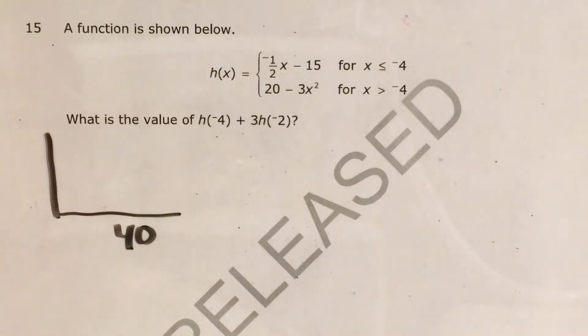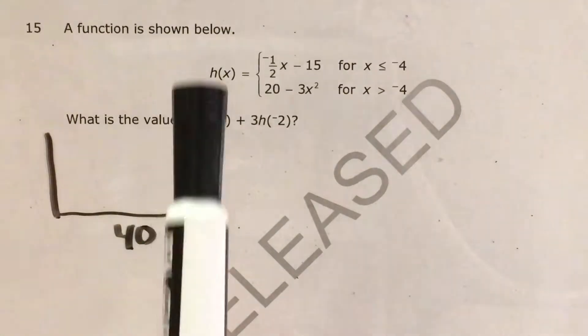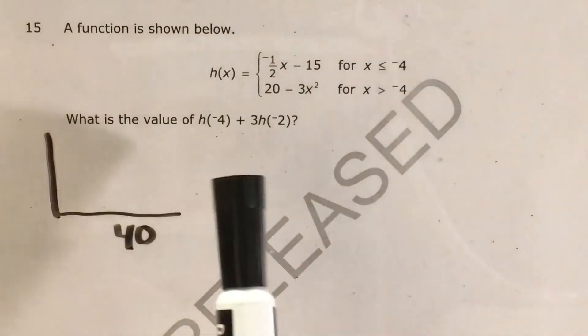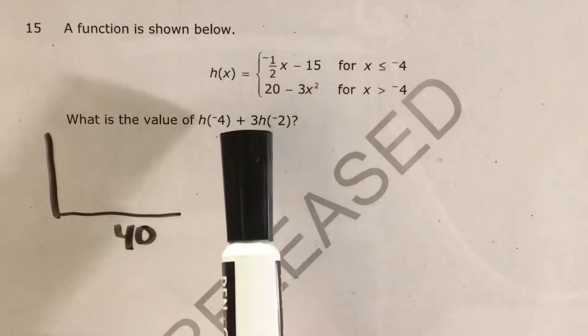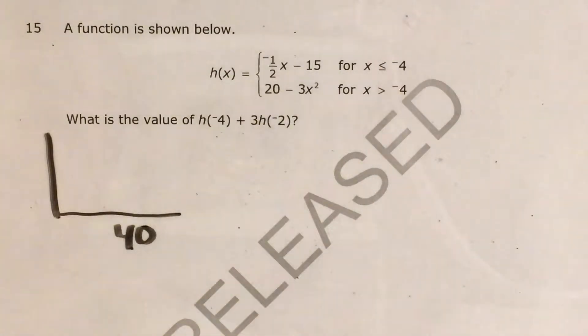What's up math scholars and math haters? This is Mr. W. Today we're going to tackle question 15 in the math 3 questions that North Carolina released this past school year. The question gives us a piecewise function and we're supposed to find the value of h of negative 4 plus 3 times h of negative 2.